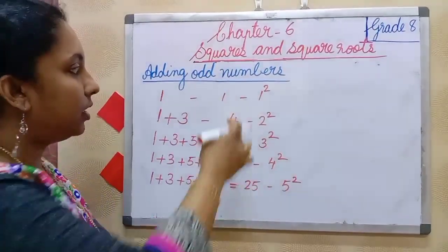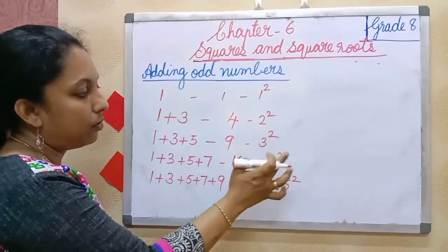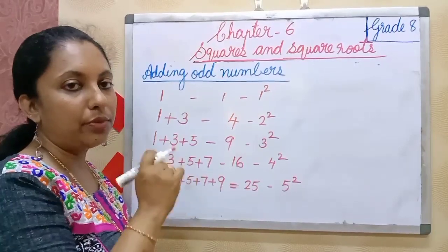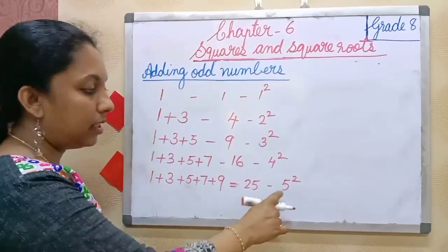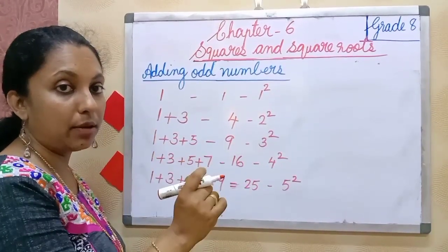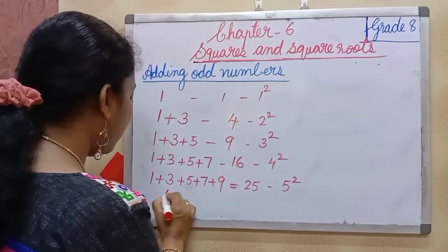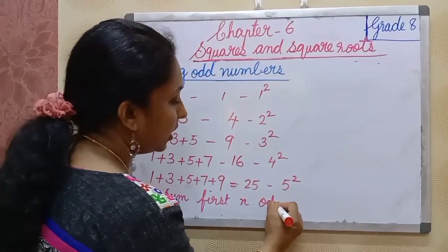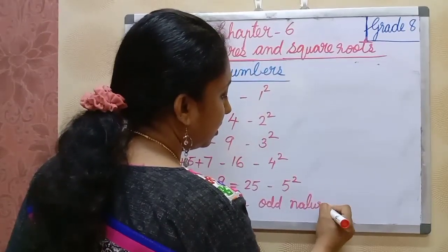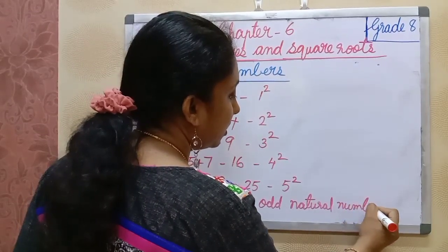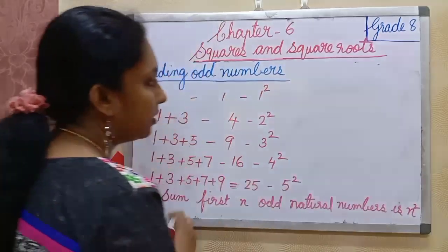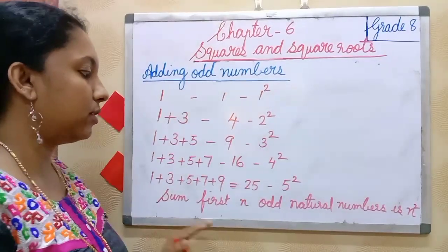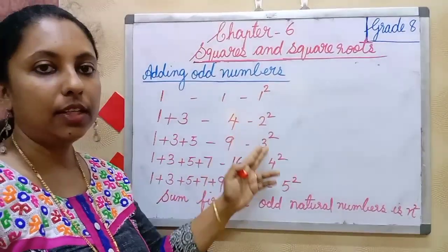See this pattern: 1 square, 2 square, 3 square, 4 square, 5 square. So in general what we can say: the sum of first n odd natural numbers is n square. We can express any such sum in the form of a perfect square number.